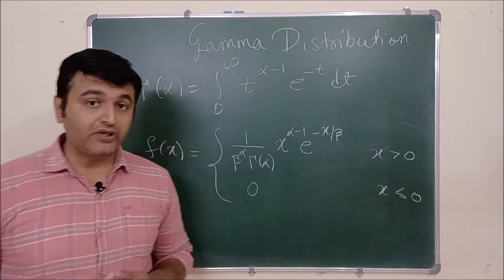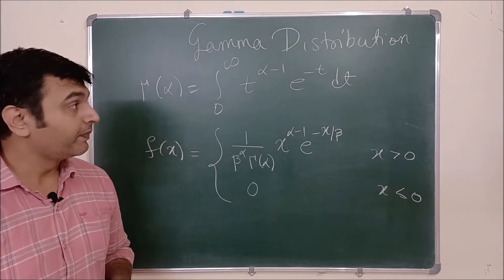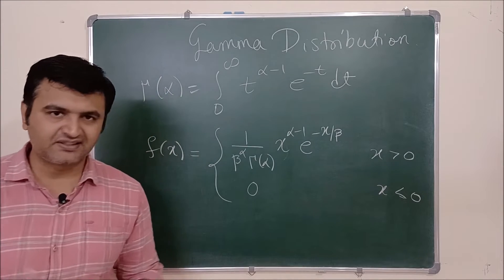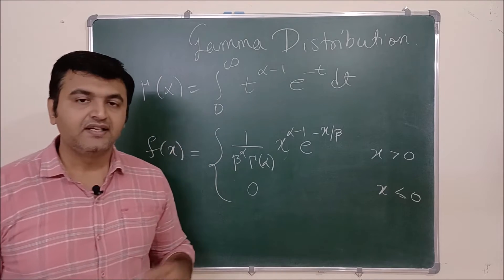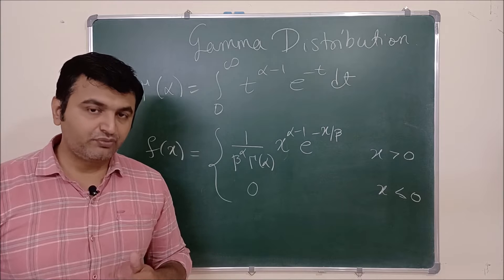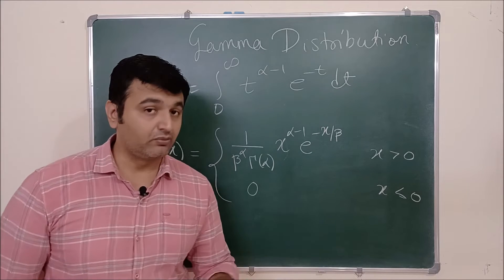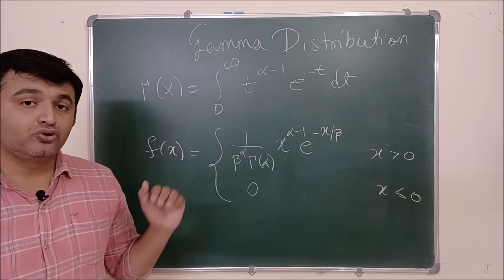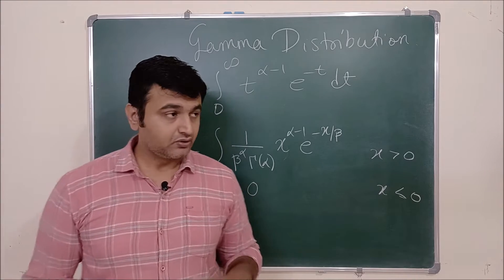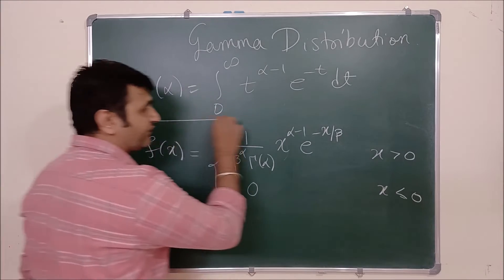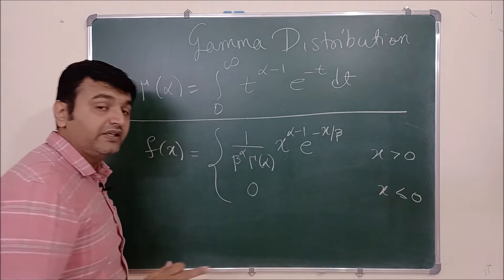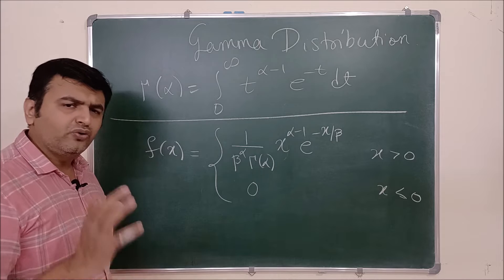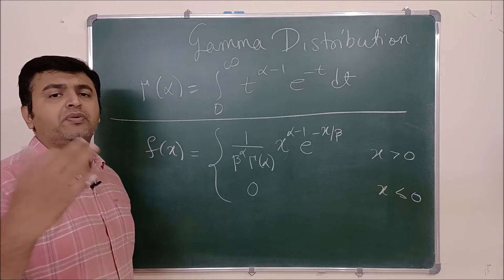Today we are going to talk about gamma distribution. The exponential distribution is just a special case of the gamma distribution — the same way geometric distribution was a special case of the negative binomial distribution. For this, you should know the concept of the gamma function. I have given a detailed lecture on it, so the link is in the description.